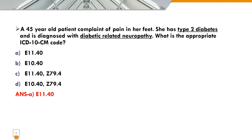We eliminate E10 and also option C, which is Z79.4 — that is the insulin code, which is not applicable here. The correct answer is option A: E11.40, type 2 diabetes mellitus with diabetic neuropathy, unspecified.